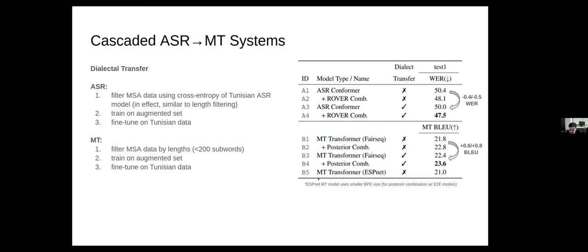I'm also showing here a model called the MT transformer in ESPNet, which only differs from our main MT models in FairSeq in having a smaller BPE size. We do this just to have a model with a similar vocabulary as the end-to-end models, which we use for posterior combination later.